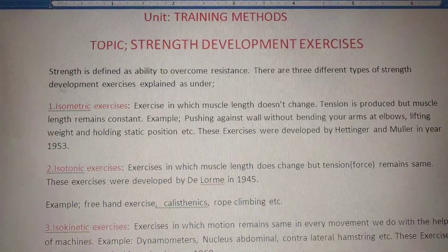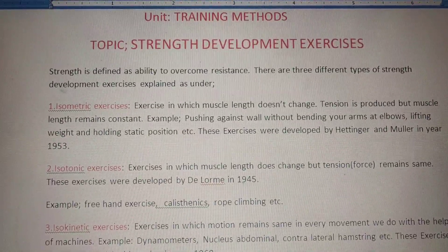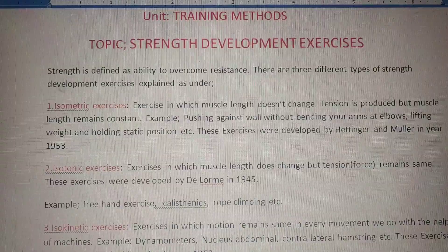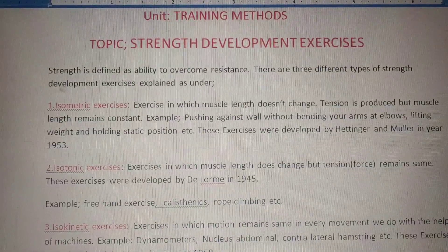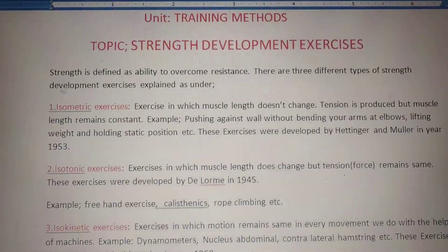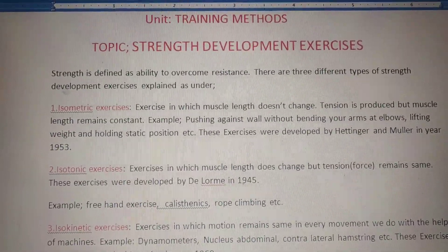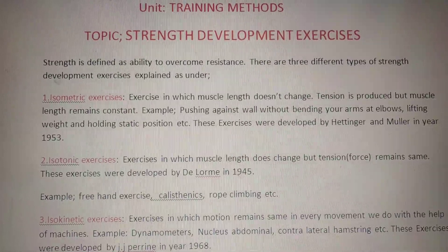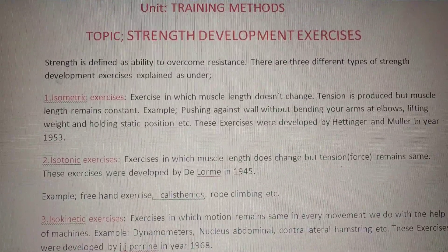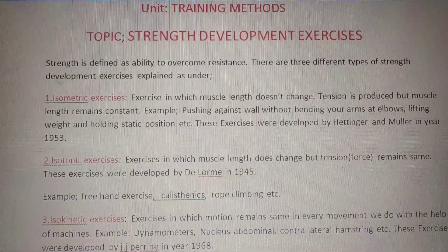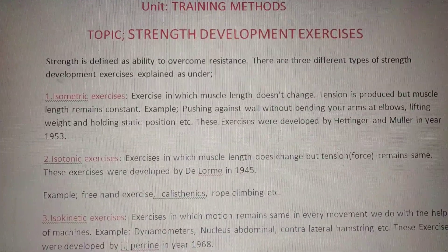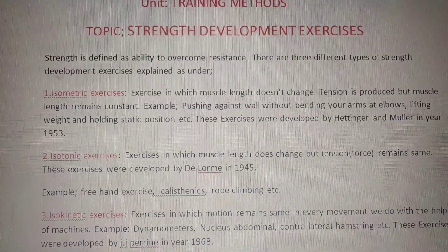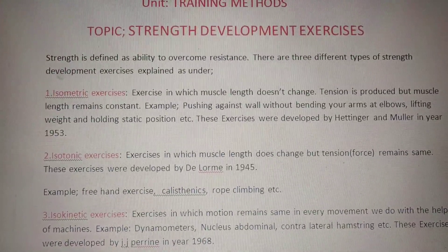Strength is defined as the ability to work against resistance. To develop strength there are different types of strength development exercises, which are explained as under. Number one: isometric exercises — exercises in which muscle length does not change; although tension is produced, the muscle length remains constant.